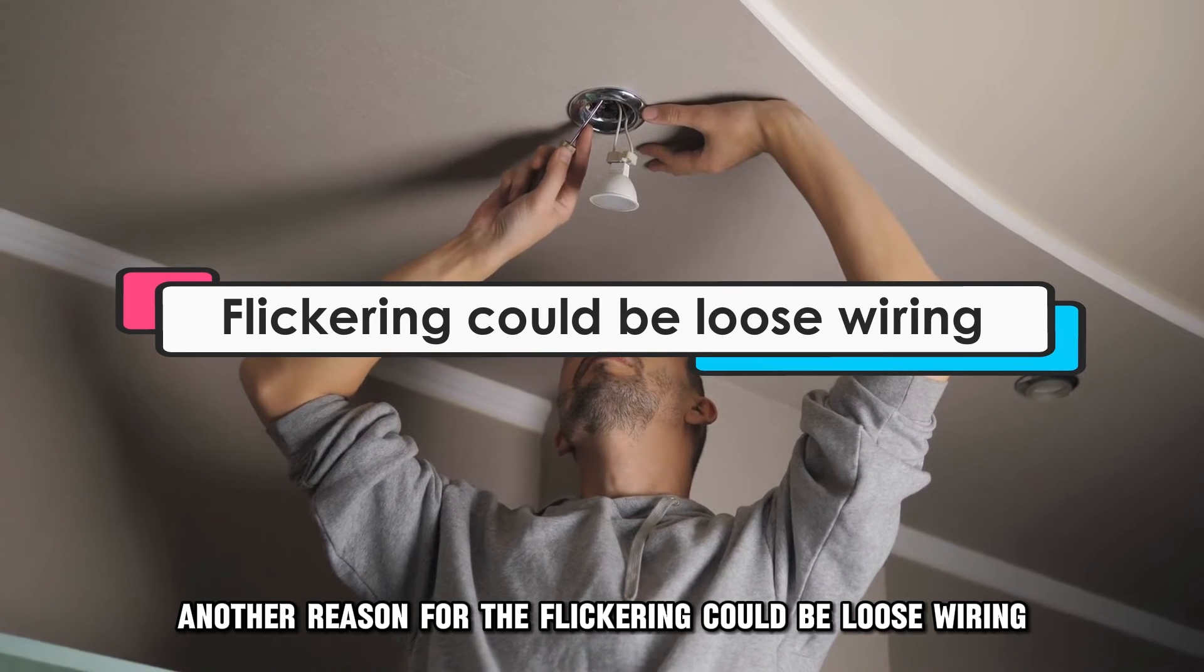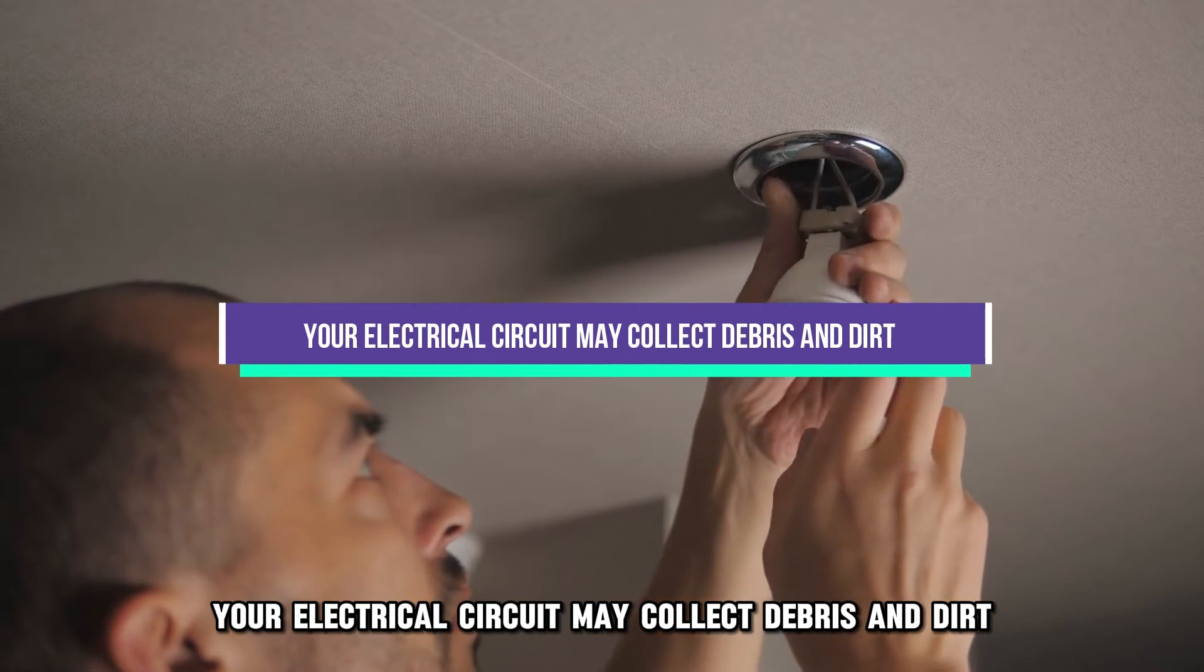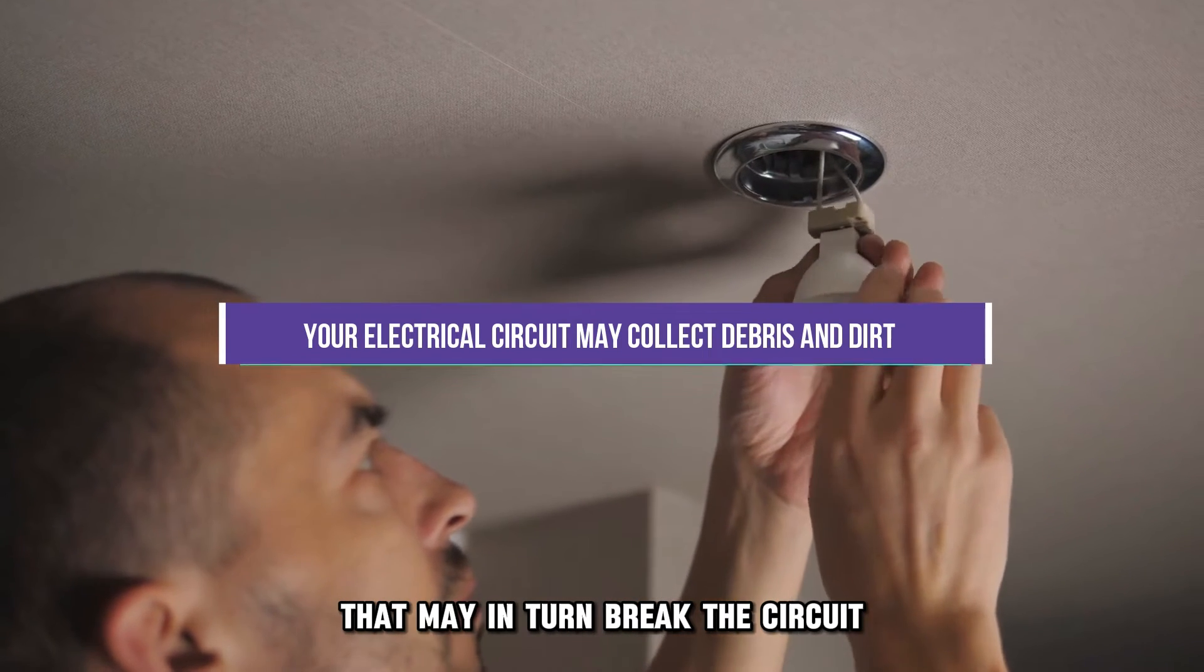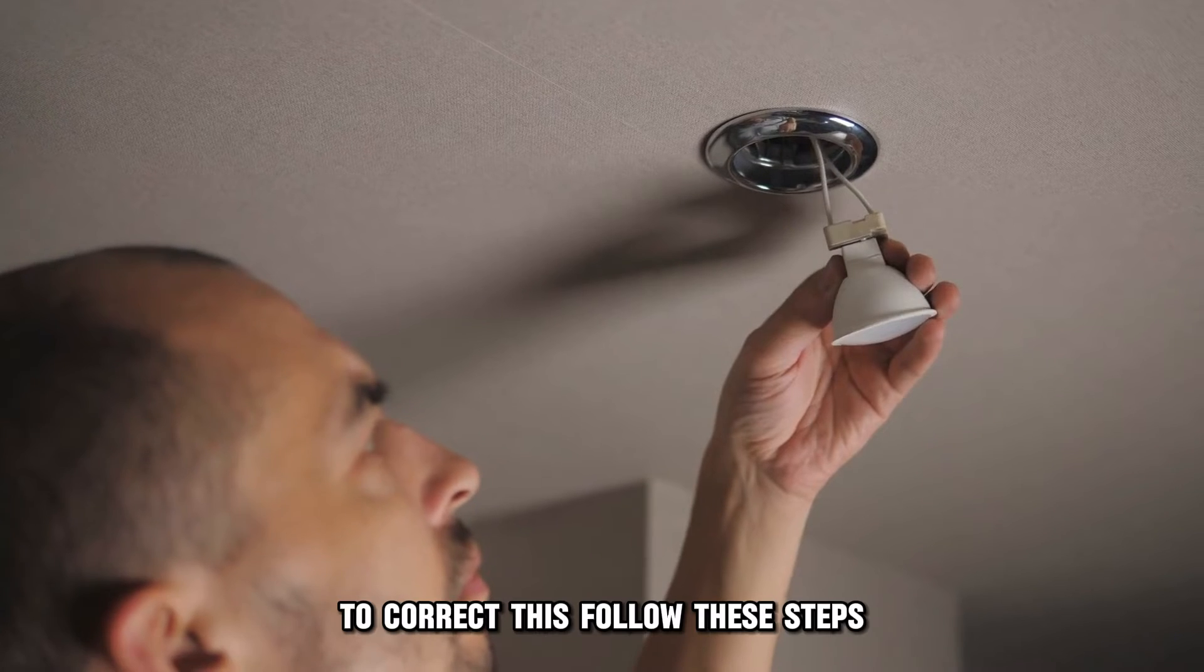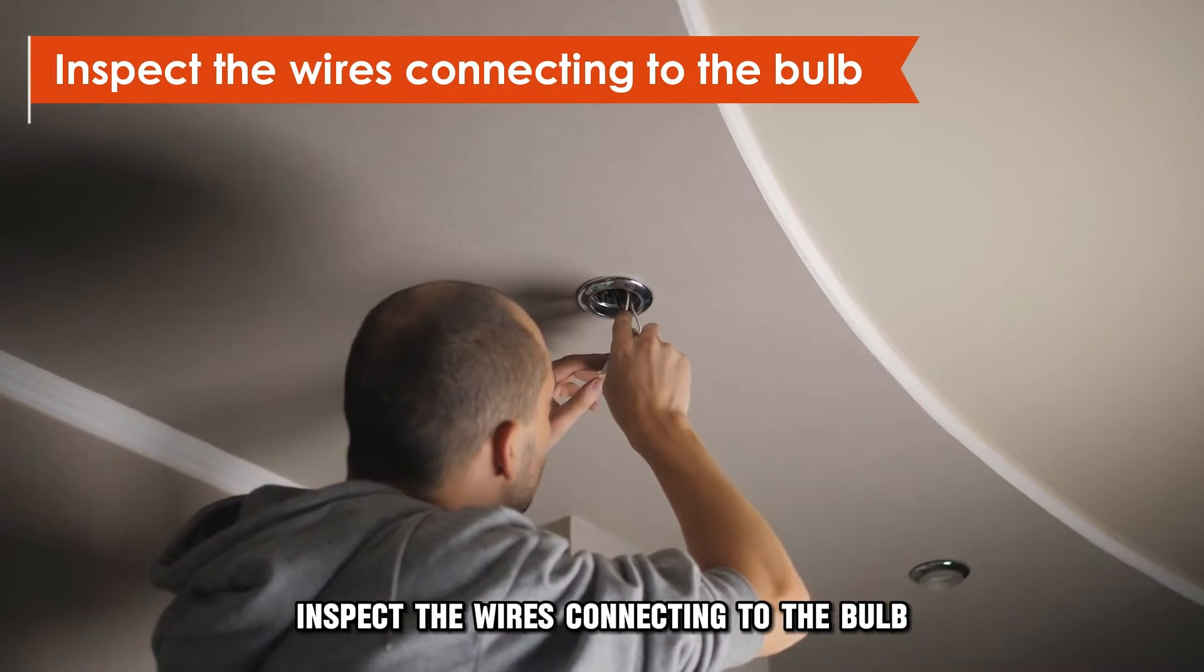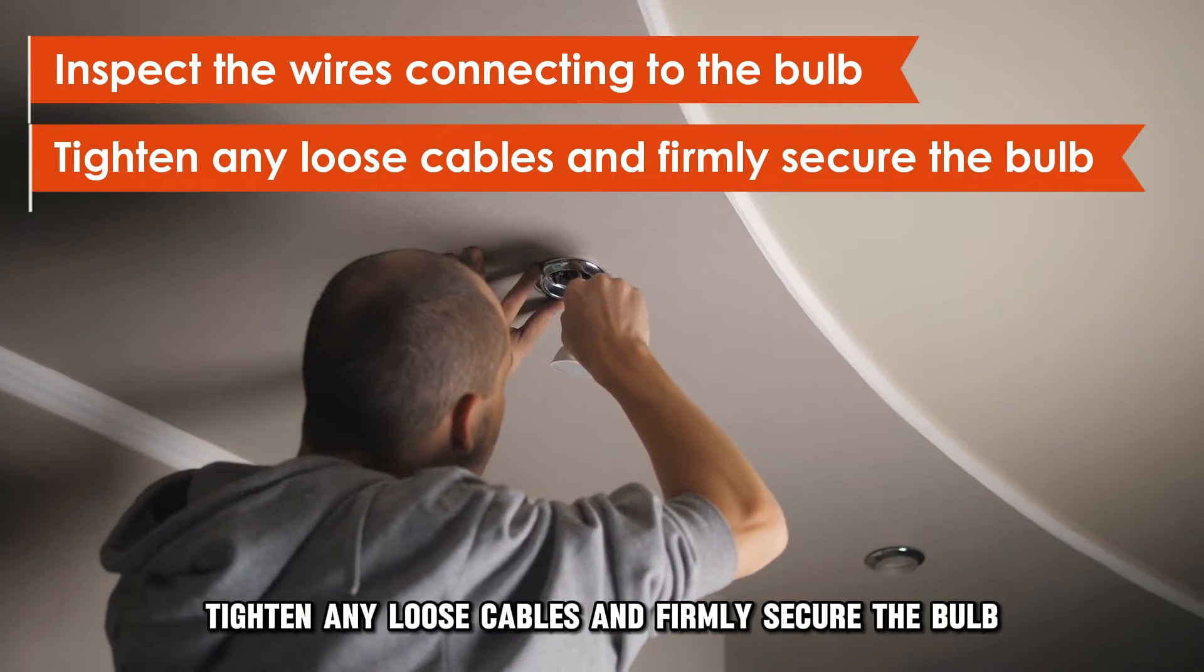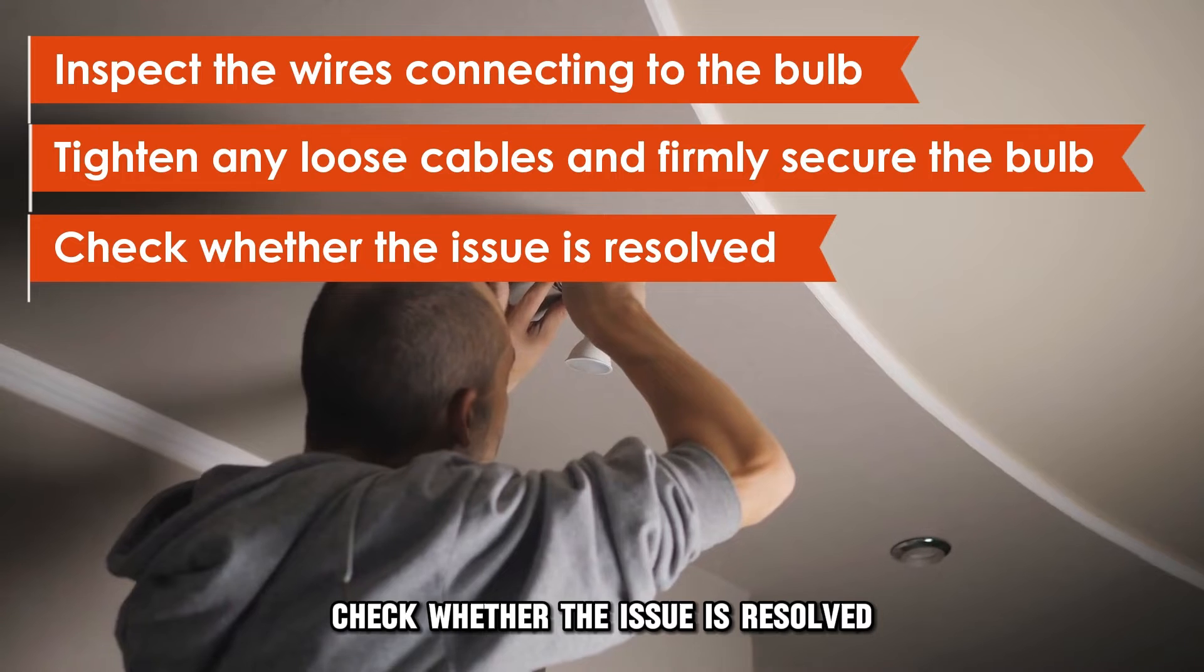Another reason for the flickering could be loose wiring. Over time, your electrical circuit may collect debris and dirt that may, in turn, break the circuit. To correct this, follow these steps. Inspect the wires connecting to the bulb. Tighten any loose cables and firmly secure the bulb. Check whether the issue is resolved.